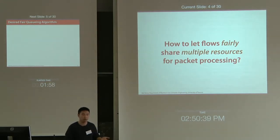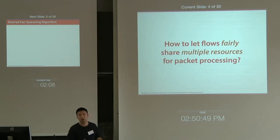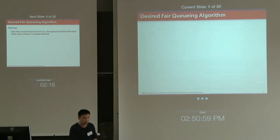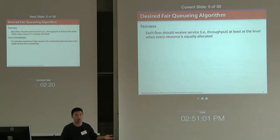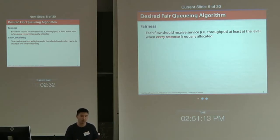Given these heterogeneous resource demands, one important question is: how can we let flows fairly share these multiple middlebox resources for packet processing? That requires a fair scheduling algorithm that works on multiple resources. We require fairness, meaning each flow should receive throughput at least at the level when each of the middlebox resources are equally allocated.